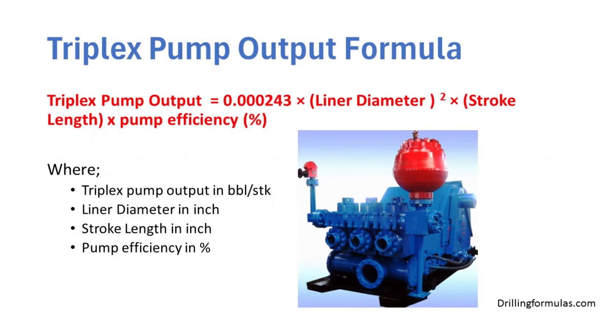Triplex pump output formula is 0.000243 multiplied by liner diameter square, multiplied by stroke length, multiplied by pump efficiency.